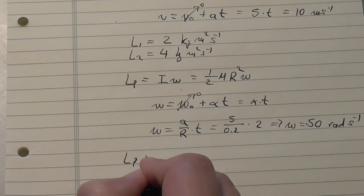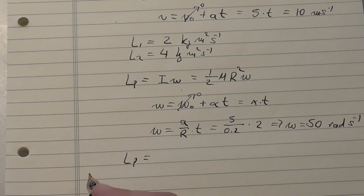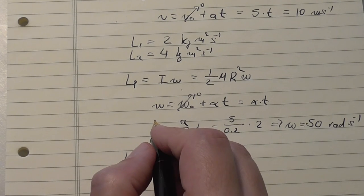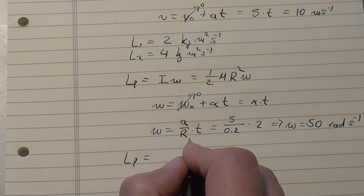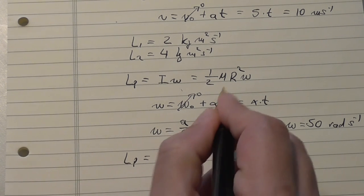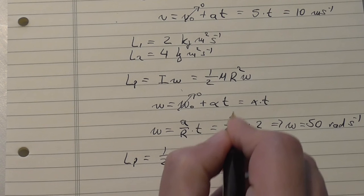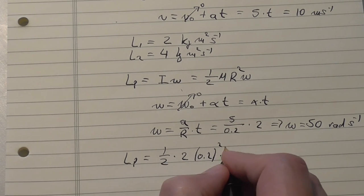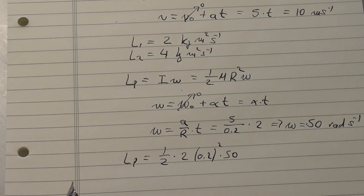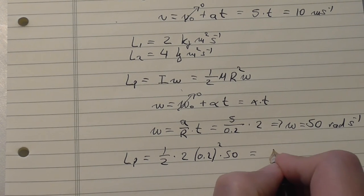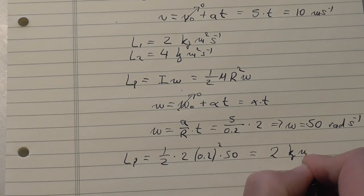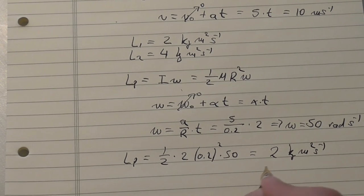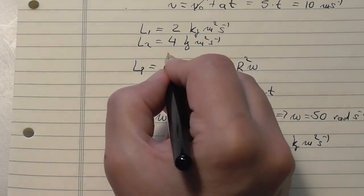What is the angular momentum of the disc? Is one half, the mass was 2, this was 0.2 squared, and this is times 50, and all this will give me 2 kilograms, same units, meters squared per second.